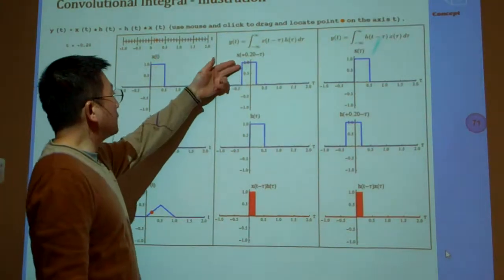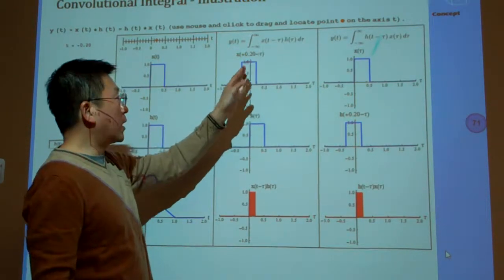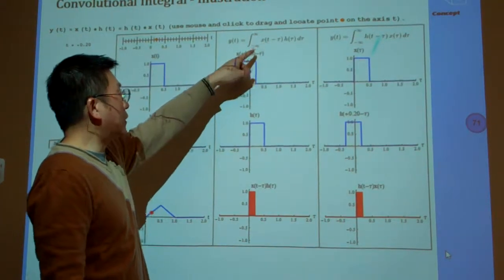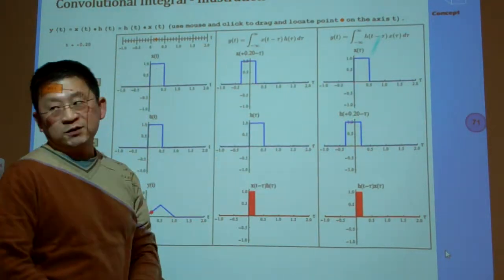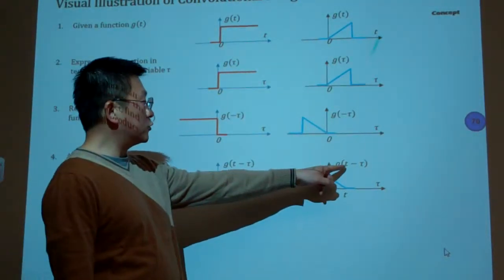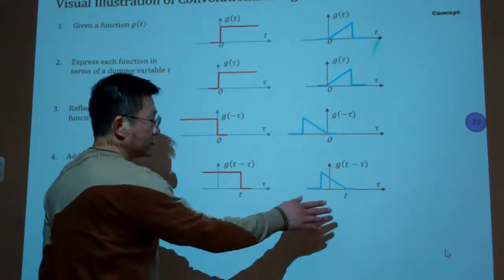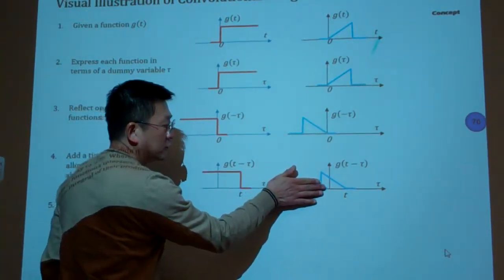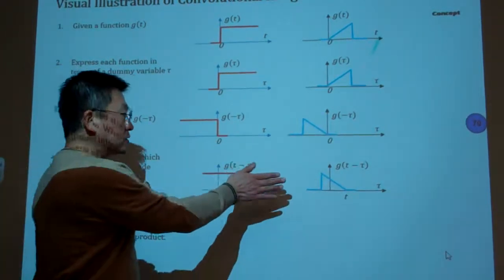Then once we have this function be built up according to this step from the previous page, then we can draw it on the coordinate system. And then from this time being, we simply change the value of T from minus infinity, gradually go to the positive infinity. So that means in this step, if we want to choose T to change from minus infinity, basically you can imagine, have you played the, just like the Mario. This is a function basically moving from this axis and then along with time kind of moving, traveling to there. So that is the movement of these functions.